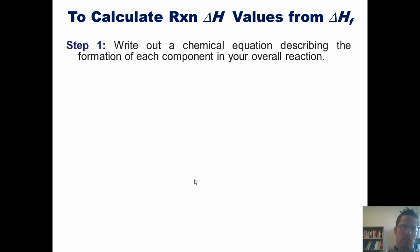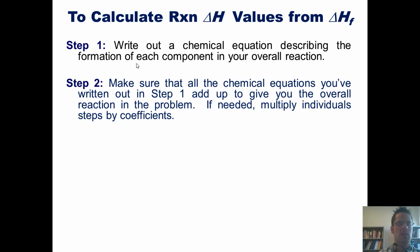Here are the overall steps. One, write out the chemical equation describing the formation of each component in our overall reaction. Two, make sure that all the chemical equations add up to give the overall equation in the problem. If needed, multiply individual steps by coefficients.